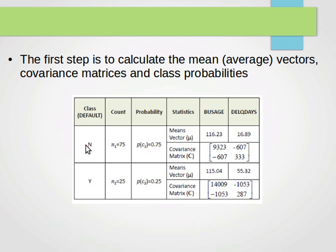As you see here, the no class number of instances is 75. Probability now is 75 over 100, which is 0.75. This is for the first class. For the second class, probability is 25 over 100, which is 0.25.